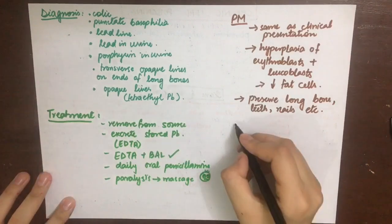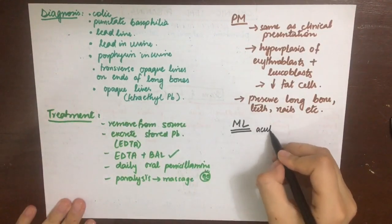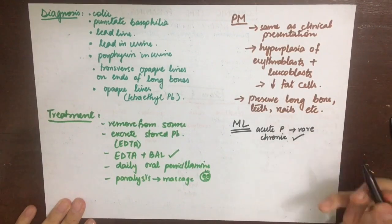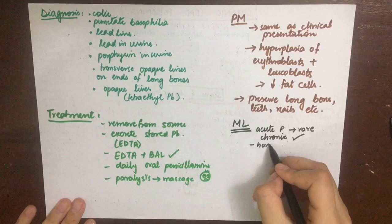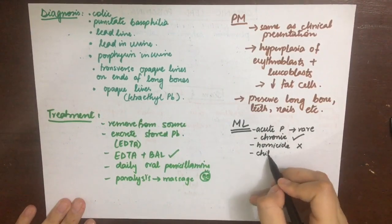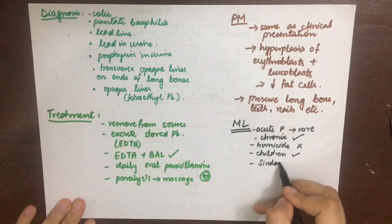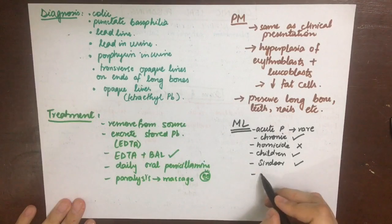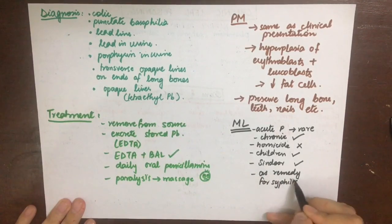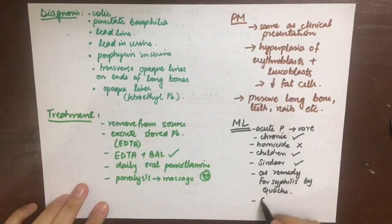The medico-legal importance of chronic lead poisoning: acute poisoning is rare and not used for homicide, although children can be poisoned accidentally by eating paint on cribs and toys. Lead monoxide can be used by quacks as a remedy for syphilis. Vermilion or sindoor used by Hindu women can also cause chronic lead poisoning. Food and water contamination can also occur, and red lead is used as a kettle poison.